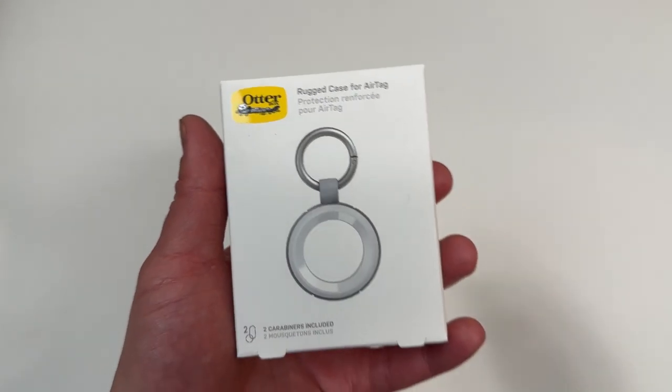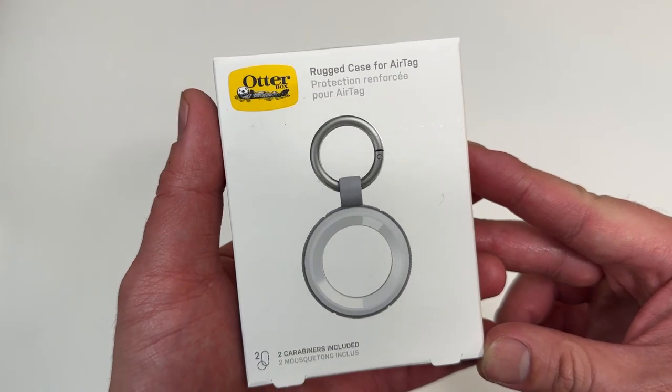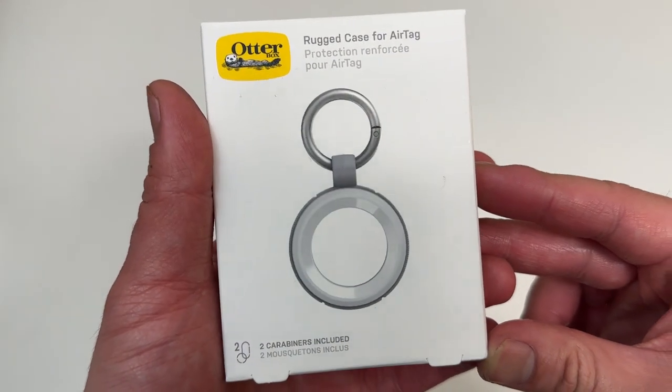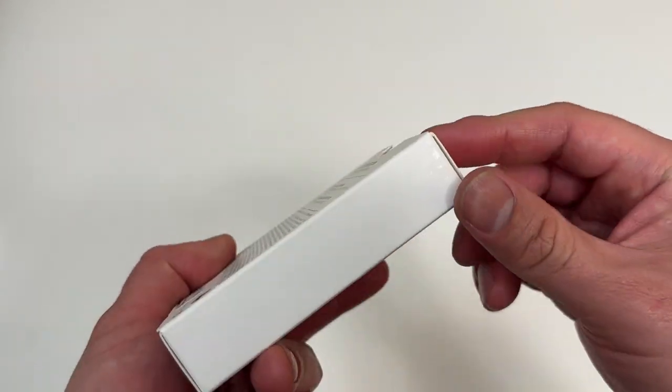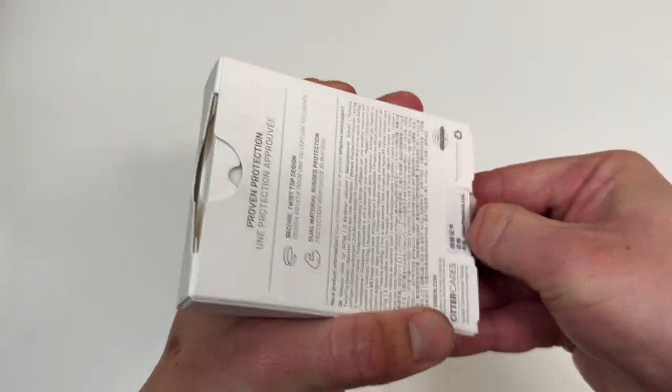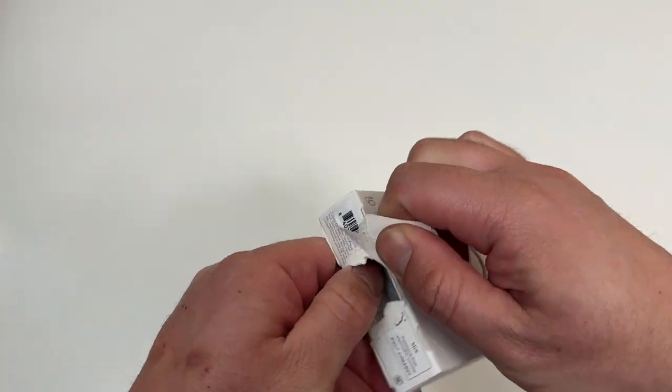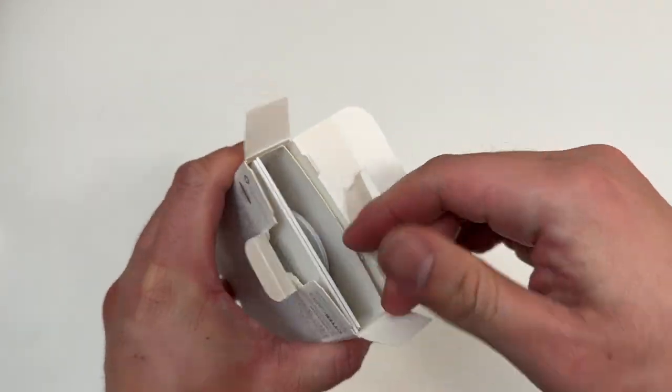Let's go everyone, today we're unboxing this OtterBox rugged case for AirTag in white color. I got the first one in black, so I'm going to show you how the white color one looks.